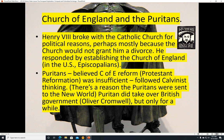And the Church of England and the Puritans — Henry VIII broke with the Catholic Church for political reasons, perhaps mostly because the church would not grant him a divorce. He responded by establishing his own church, the Church of England, which in the U.S. is known as the Episcopalians, basically taking the English branches of the Catholic Church and turning that into the Church of England. Puritans believed the Protestant Reformation of England was insufficient, and they followed Calvinist thinking. There's a reason Puritans were sent to the New World — they didn't really agree with mainstream Church of England thought. The Puritans did actually take over the British government for a while under Oliver Cromwell, but when they went out of power, the Puritans were strongly encouraged to go to the New World, and many of them did.